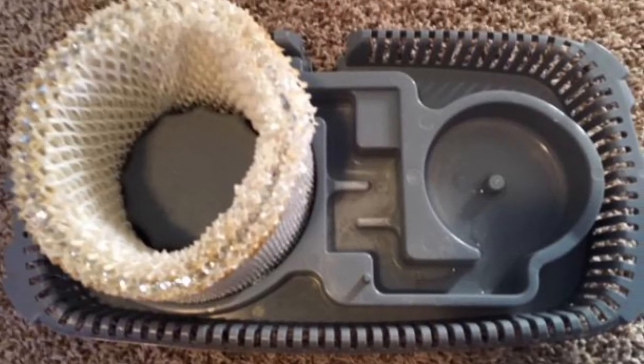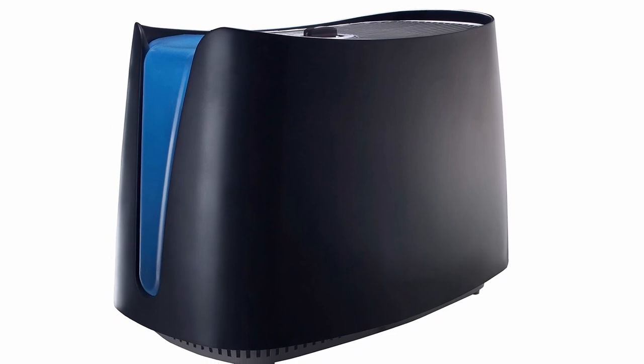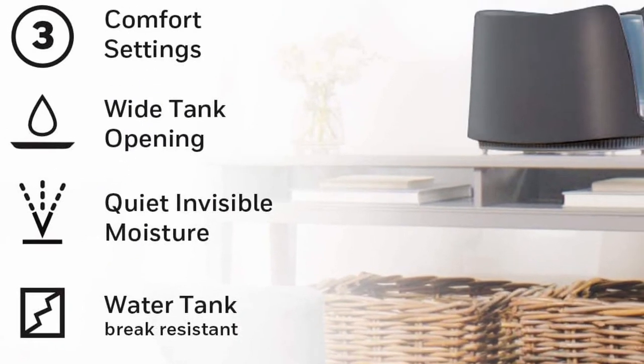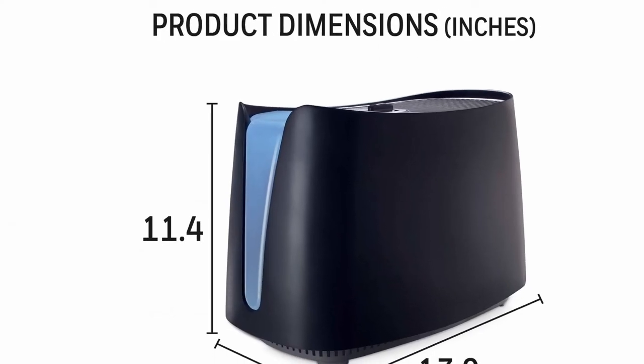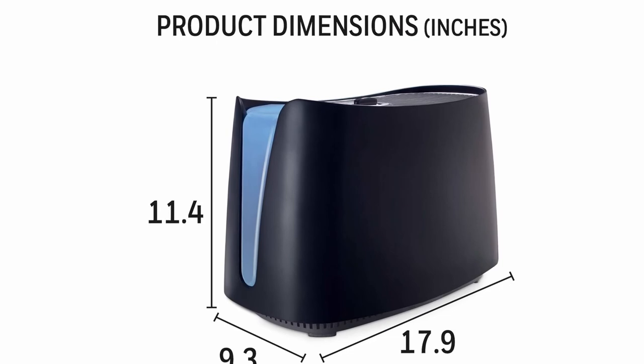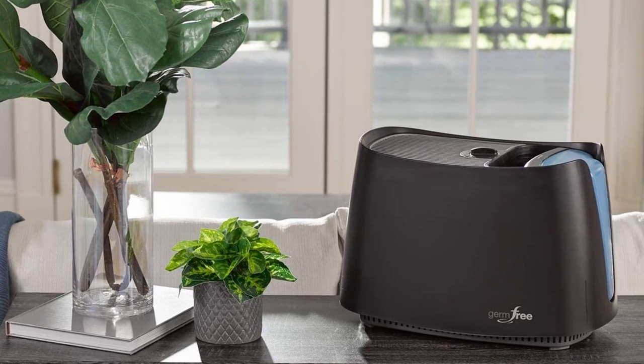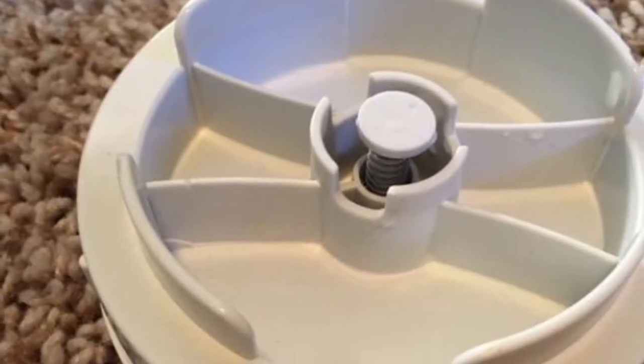Moreover, this humidifier boasts an elegant and clean mist production system to kill germs up to 99.9% in the water before it is mistified and released into the atmosphere using ultraviolet light. To prevent germ growth, the Honeywell HCM-350B also contains filters that are treated with antimicrobial substances. For additional protection, there is a ProTech cleaning ball included to reduce bacteria growth in water tanks.